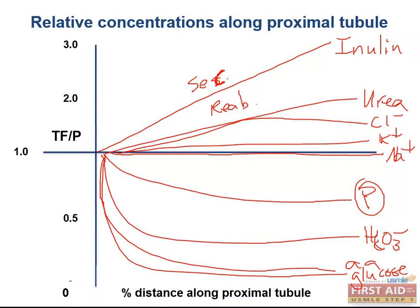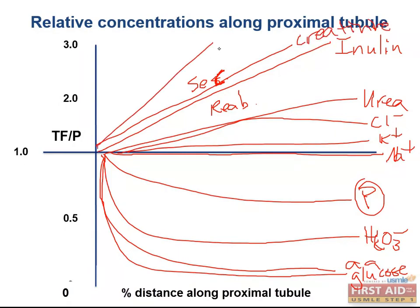Molecules that are secreted include things like creatinine and PAH, which we use to measure effective renal plasma flow. We know they're secreted because their TF to P ratio is above inulin. The concepts behind this graph are high yield on the exam, and if you understand how the proximal tubule works, you shouldn't have trouble filling things in.